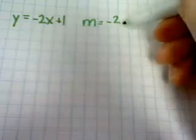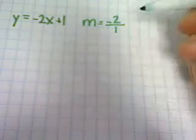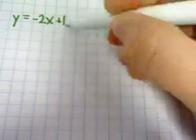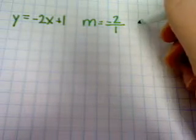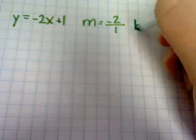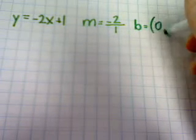If I wanted to write the negative 2 as a ratio, I'd write negative 2 over 1. And then the 1 at the end is the intercept on the y-axis, and this would be at the point (0,1).